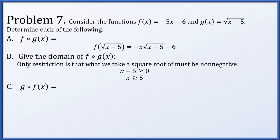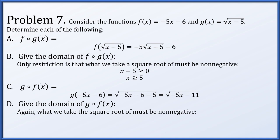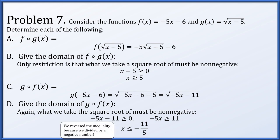For g of f of x, we plug negative 5x minus 6 into g, giving the square root of negative 5x minus 6 minus 5, which is the square root of negative 5x minus 11. For the domain, negative 5x minus 11 must be non-negative. Adding 11 and dividing by negative 5 — flipping the inequality — gives x less than or equal to negative 11 over 5. Remember: multiplying or dividing an inequality by a negative number reverses the inequality direction.